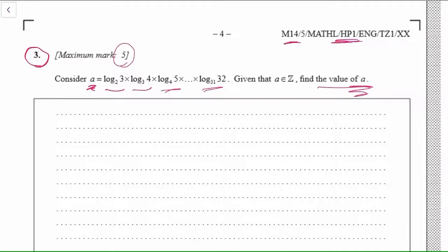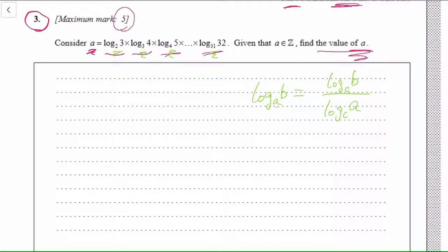Now, all the logs have different bases. This should be the number one sign to use the change of base formula. You probably know that the change of base formula works like this: the original number goes on top, the base goes to the bottom, and you log it. You can choose the new base to be anything you like, as long as you do it the same for the top and bottom. We don't have to decide on the new base just yet — let's just see what would happen.